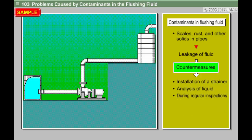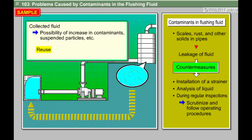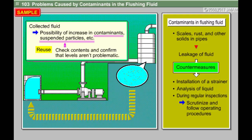Also, during regular inspections of the plant, we have to scrutinize operating procedures carefully and ensure that we follow them. In particular, when fluids are collected, for instance when equipment is shut down, there's a possibility of an increase in contaminants and suspended particles. When reusing fluids, we have to check their contents and confirm that the levels aren't problematic.